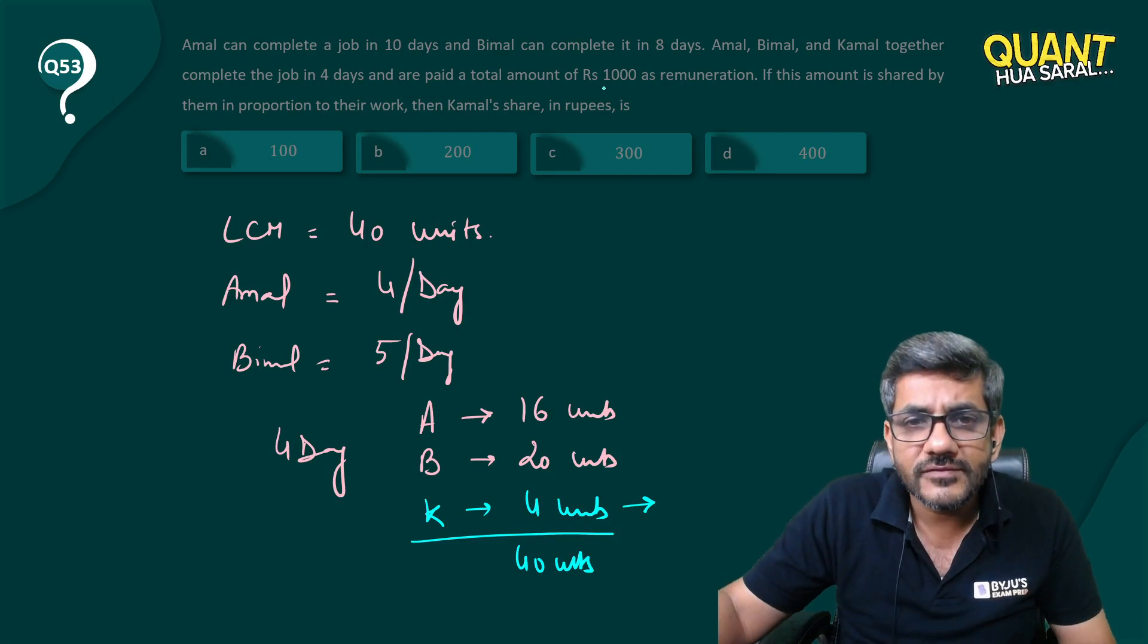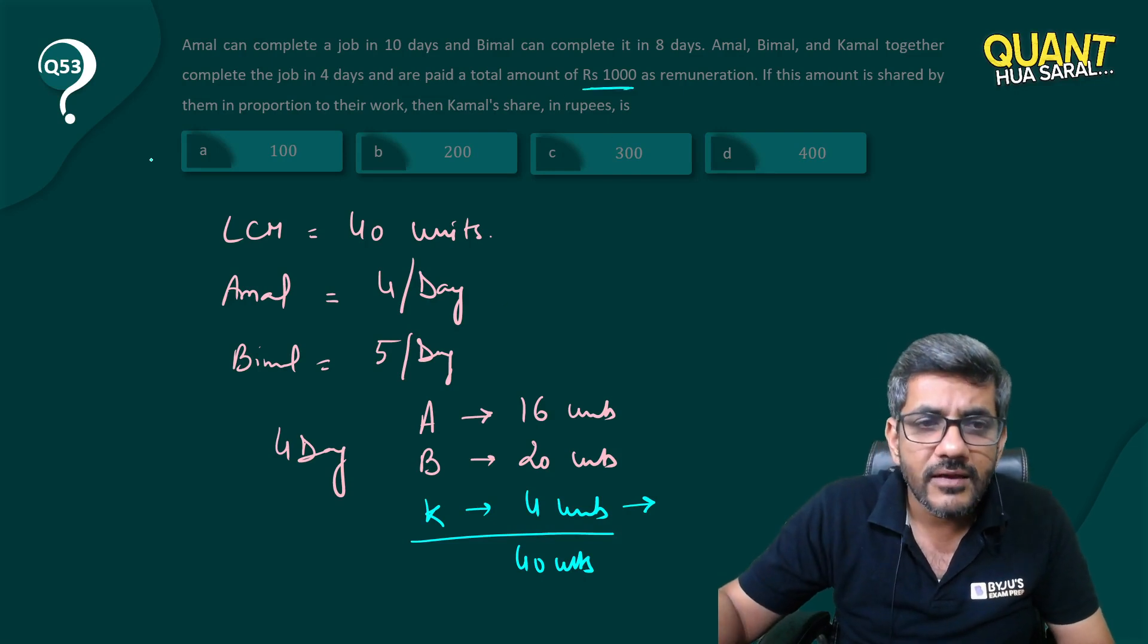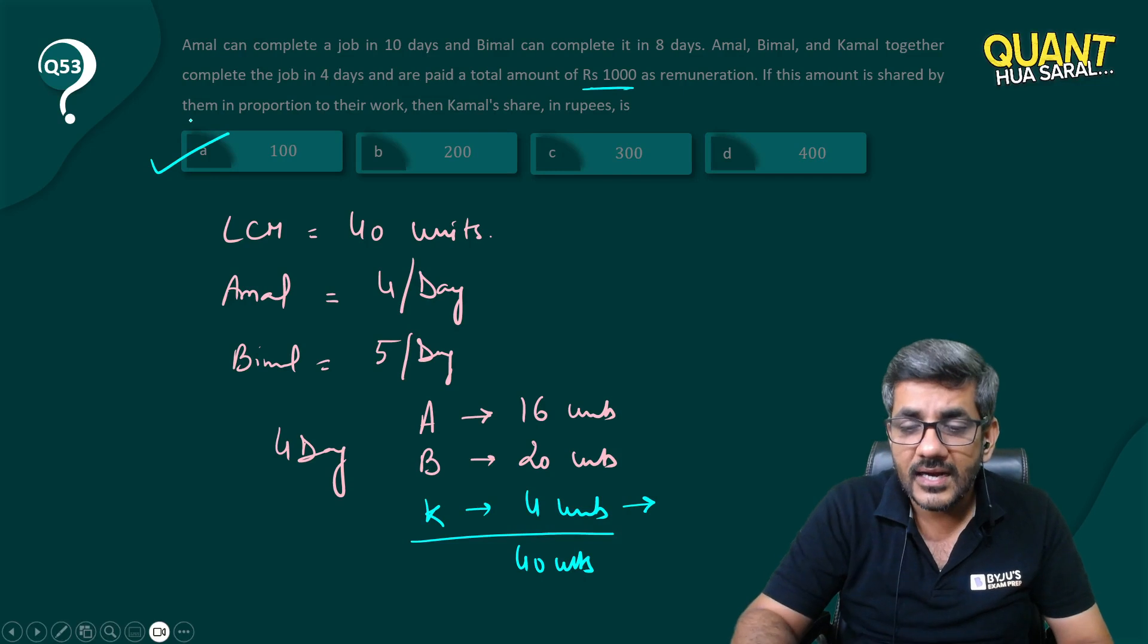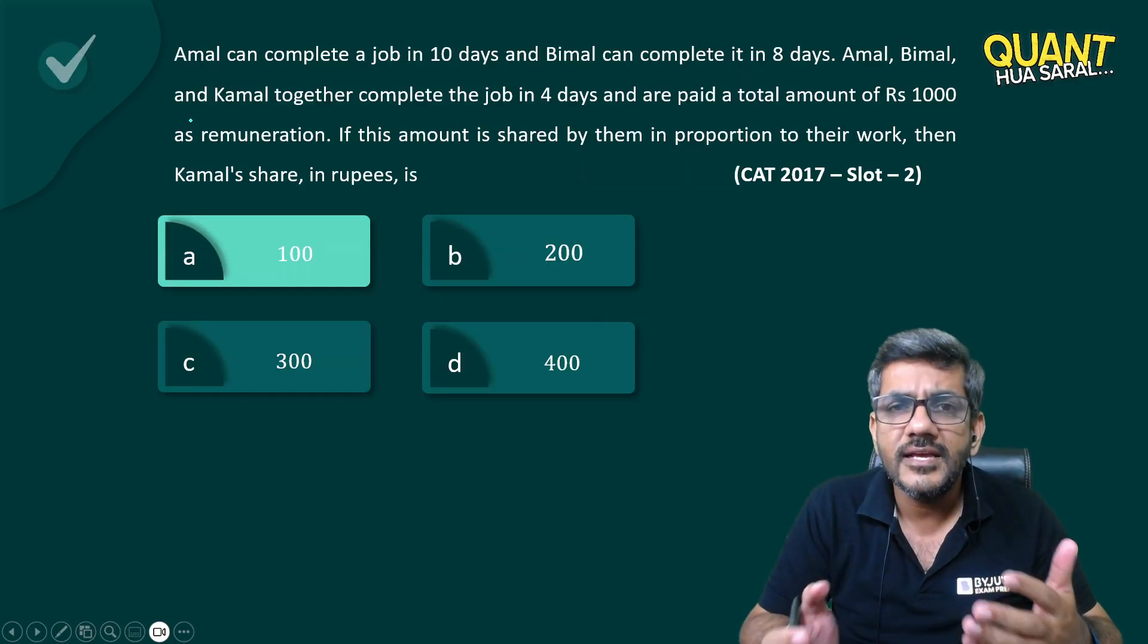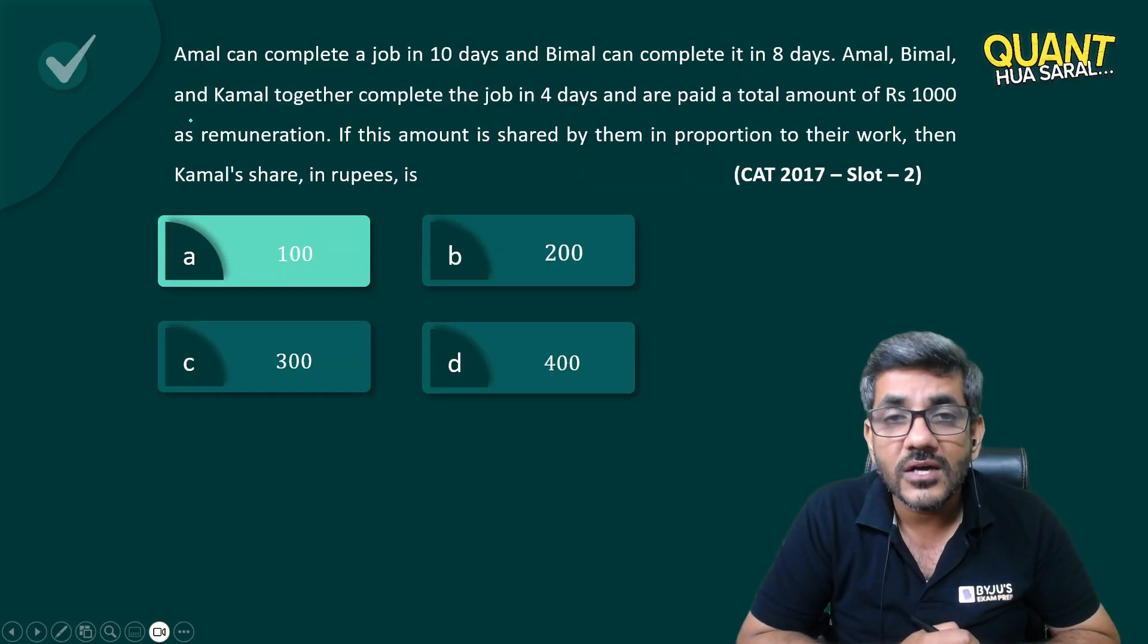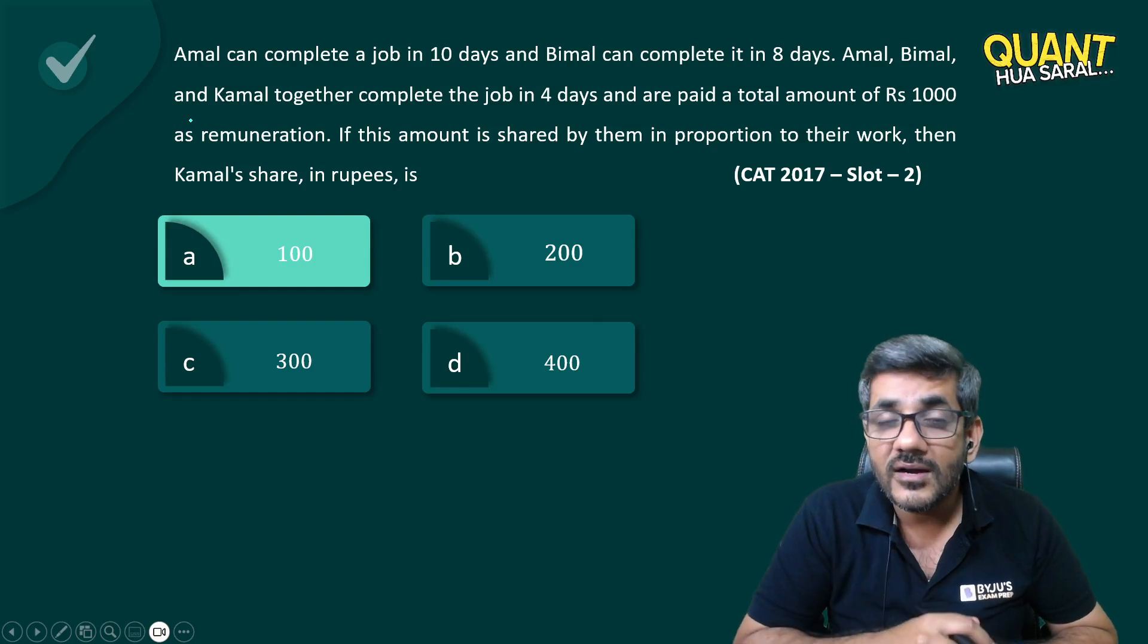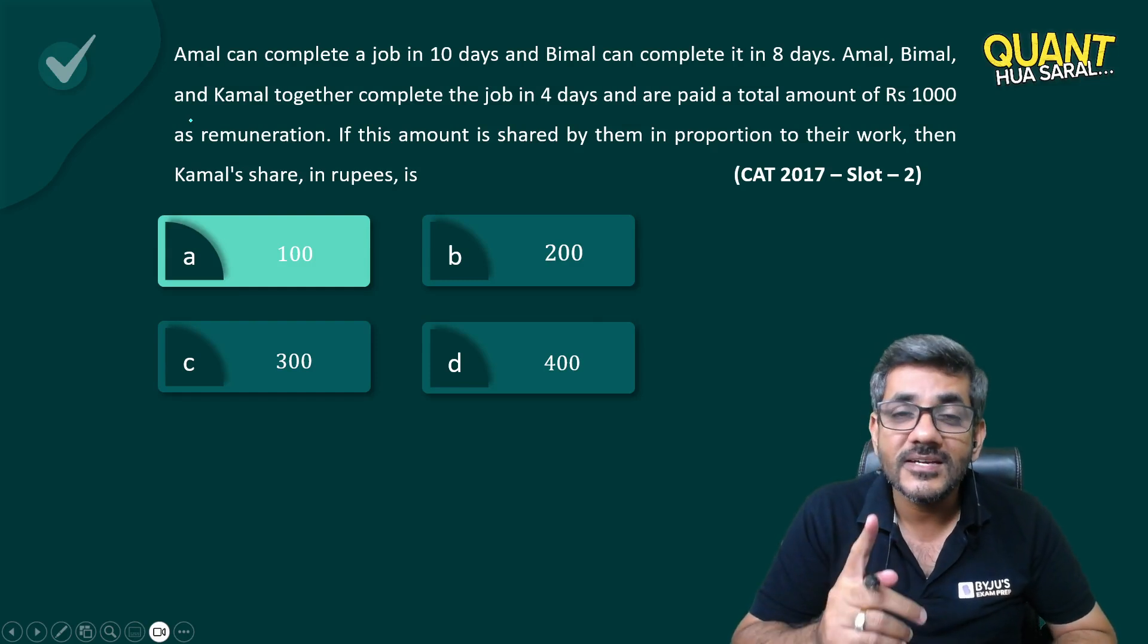So the total money is Rs 1000, he would be getting 100 rupees, and that's what our answer is. Such an easy question asked in CAT 2017, and more importantly, this CAT 2017 was the year where IIM Lucknow conducted the paper.